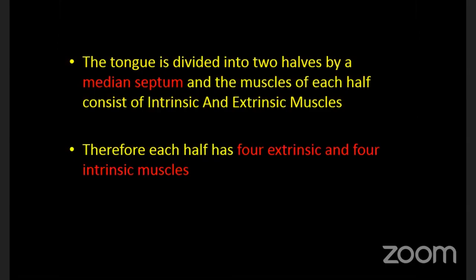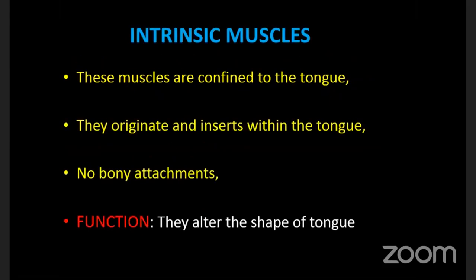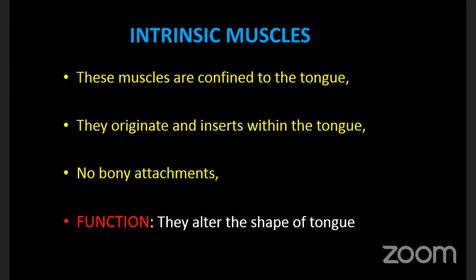The tongue is divided into two halves by a median septum, and the muscles of each half consist of intrinsic and extrinsic muscles. Each half has four extrinsic and four intrinsic muscles. The intrinsic muscles alter the shape of the tongue, so they are confined to the tongue itself - they originate and insert within the tongue.